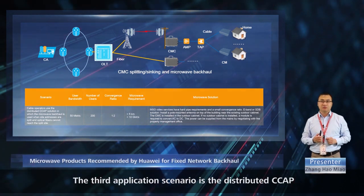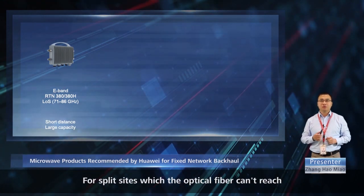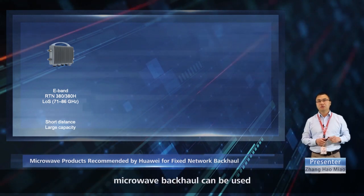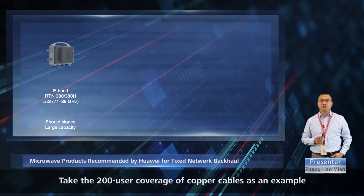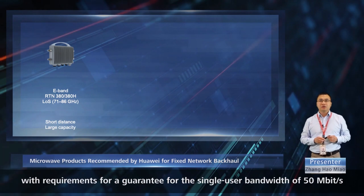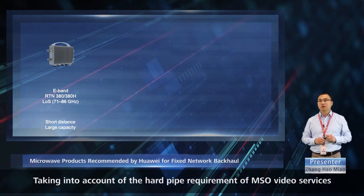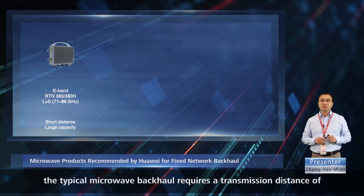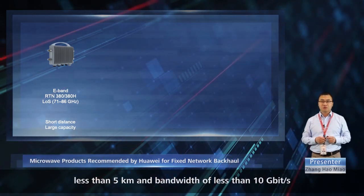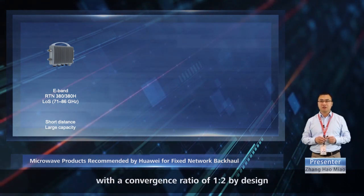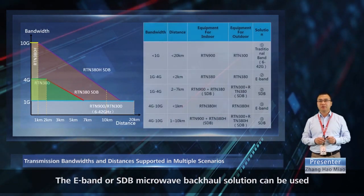The third application scenario is the distributed CCAP solution used by cable operators. For split sites which the optical fiber can't reach, microwave backhaul can be used. Take the 200-user coverage of copper cables as an example, with a guaranteed single-user bandwidth of 50 megabits per second. Taking into account the hard pipe requirement of MSO video services, the typical microwave backhaul requires a transmission distance of less than 5 kilometers and bandwidth of less than 10 gigabits per second, with a convergence ratio of 1 to 2. The E-band or SDB microwave backhaul solution can be used.